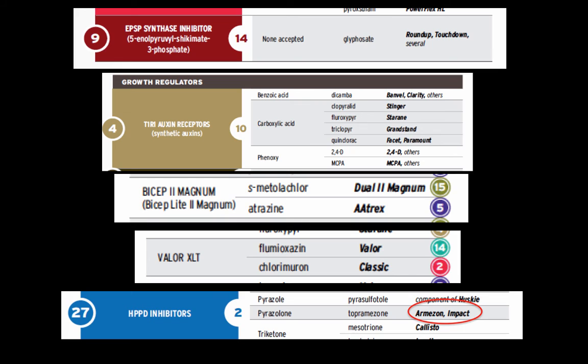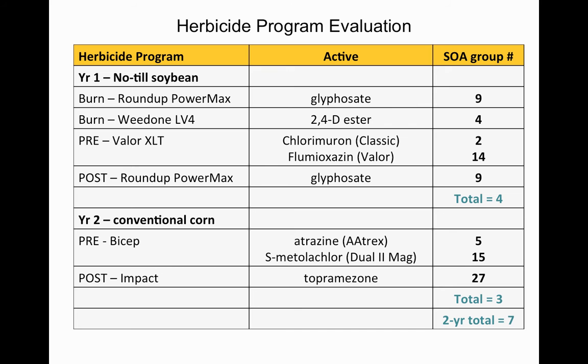You can introduce diversity by changing the post-emergence program in corn. Glyphosate is used in both corn and beans, but in corn you have other good options — for example, Impact. Looking up Impact on the chart, the common name is topramezone, and it's a Group 27 site of action. Swapping that in for glyphosate post in corn means we're back to the original bean program with 4 sites of action (9, 4, 2, 14) and 3 in corn (5, 15, 27). Since we're no longer using glyphosate both years, the 2-year total increases to 7.